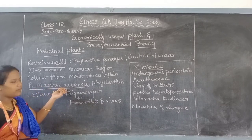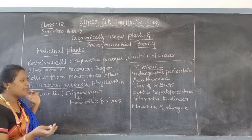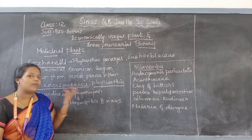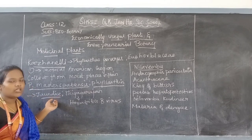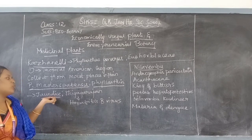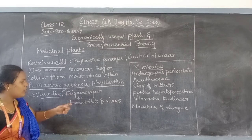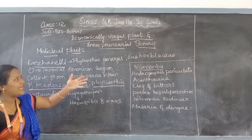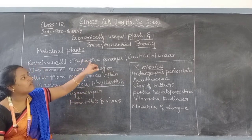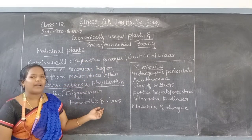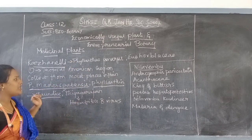Phyllanthus madraspatensis also has very good medicinal properties and is collected from non-forest areas. The key pigment in Phyllanthus amarus is phyllanthin, which has useful medicinal properties. It is used to treat jaundice, a major disease affecting India. Researcher Dr. Tyagarajan conducted extensive research and proved that the extract of Phyllanthus amarus is useful to treat the Hepatitis B virus.